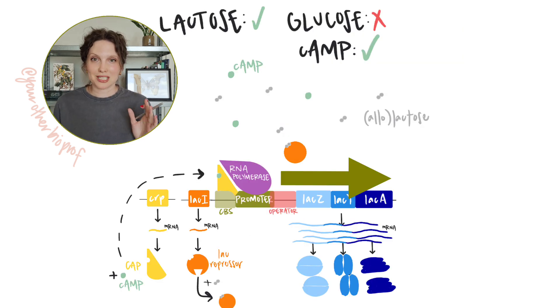This scenario is basically like maximum lac operon expression, right? We've got lactose. Yay. We've got no glucose. So you got to work with what you got here. Work with the sugar that's around. The cell is going to be pumping out enzymes to metabolize that lactose.